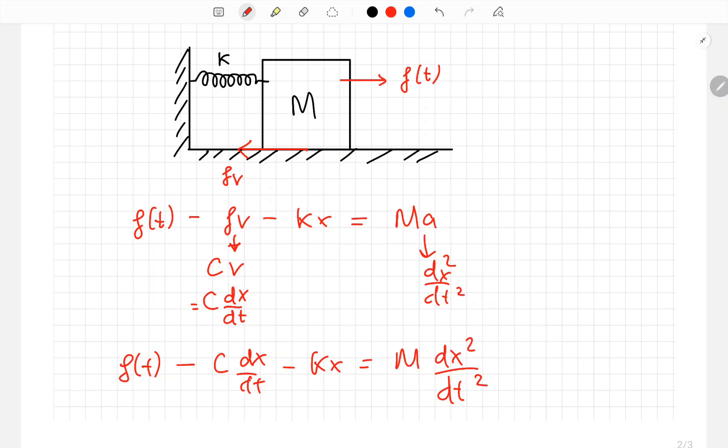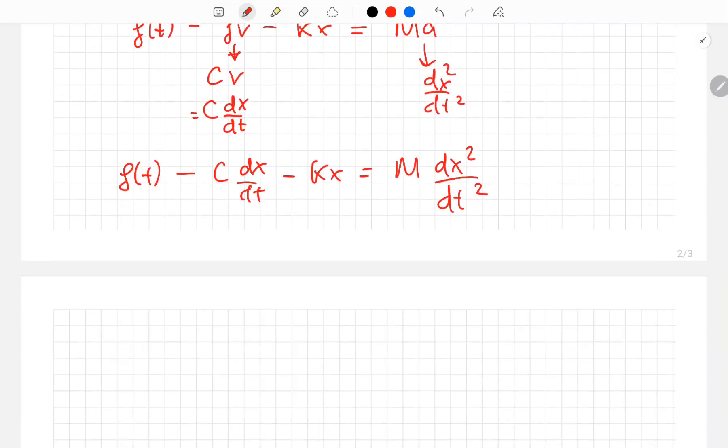This is in time domain. We apply Laplace transform on this and move to frequency domain. Now we have F of S minus C times S times X minus K times X equals M times S square times X.